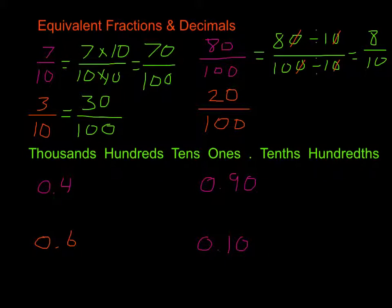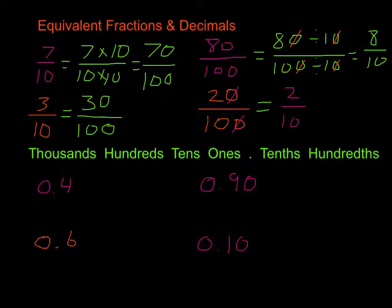Using that, we're going to solve this last one. Knowing that any time we're dividing by 10 we're taking away a zero from each side of our fraction — numerator and denominator — we're going to divide 20 hundredths by 10. We take away one zero from each, and that gives us 2 tenths. 20 hundredths is the same as 2 tenths.